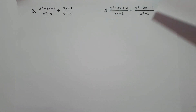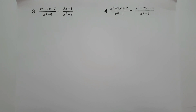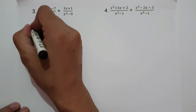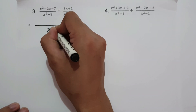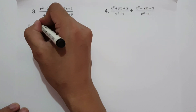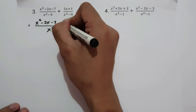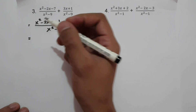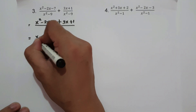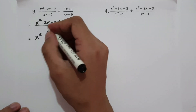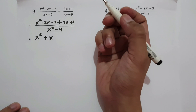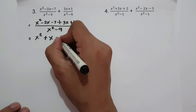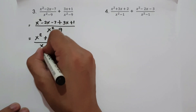Let's have another example. On number 3, we have (x squared minus 2x minus 7) all over (x squared minus 9) plus (3x plus 1) all over (x squared minus 9). Since we have the same denominator, we copy x squared minus 9 and then add the numerators: (x squared minus 2x minus 7) plus (3x plus 1). Combining like terms: negative 2x plus 3x is positive x, and negative 7 plus 1 is negative 6. This gives us (x squared plus x minus 6) over (x squared minus 9).